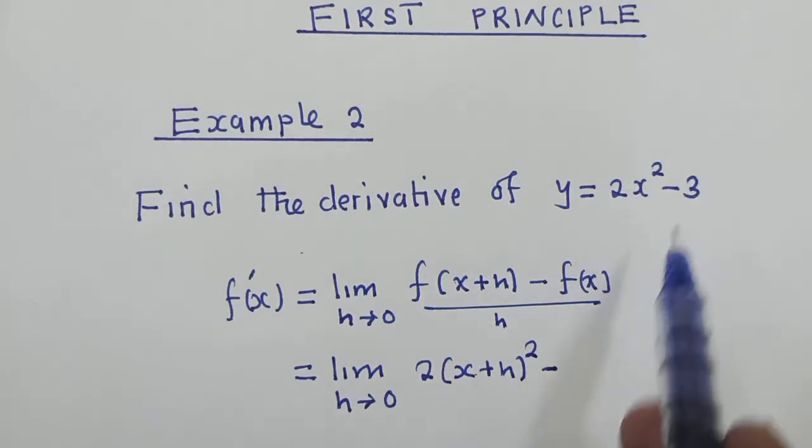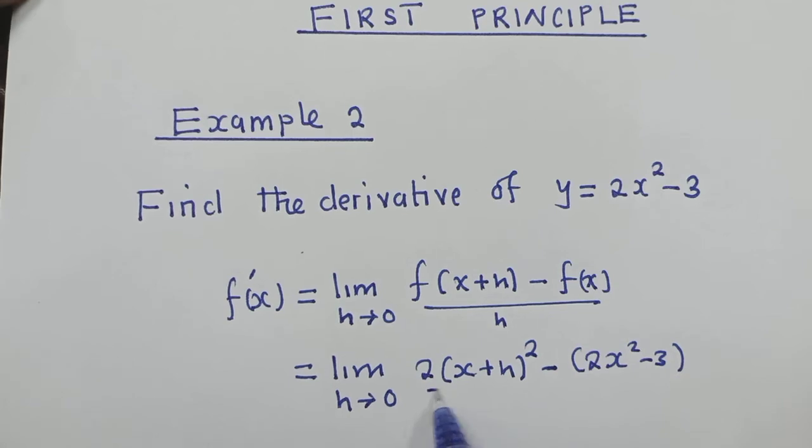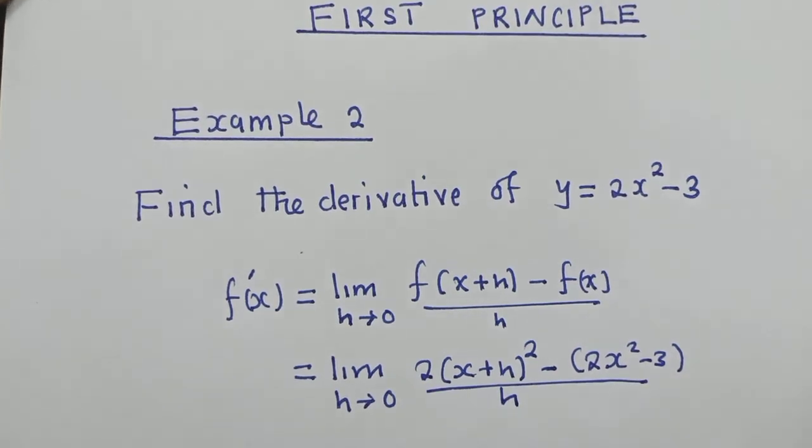We put now the entire function. So it will be 2x squared minus 3. And it must be inside the brackets because of this, this and this. So we must put it inside the brackets. Now we say over h, right?